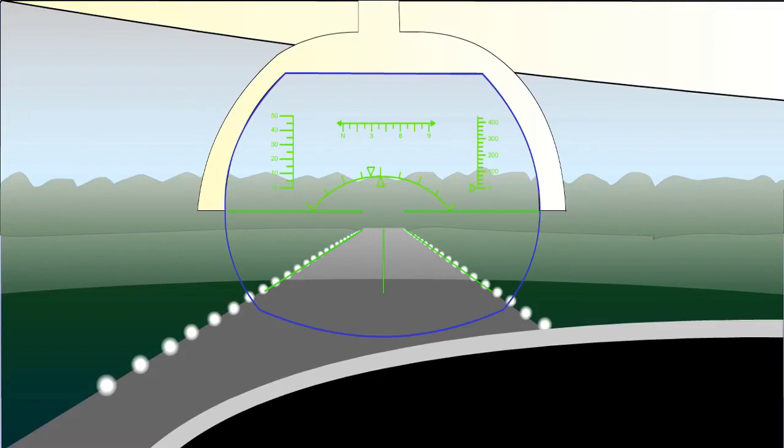Conformity means that when a symbolic object is projected onto the combiner and the actual object that it represents is visible through the windscreen, they will be aligned.